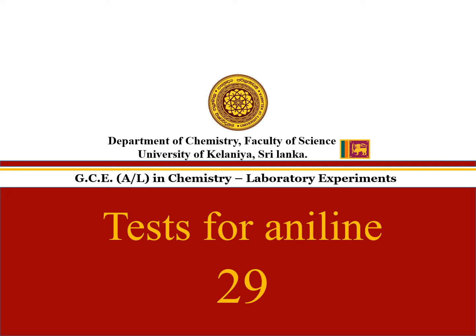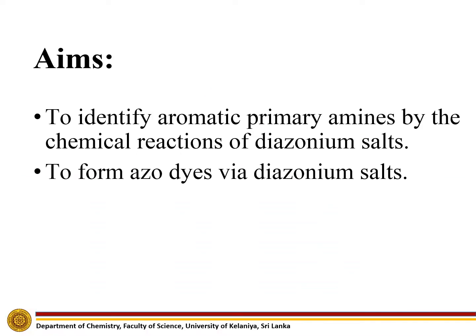Experiment number 29: Tests for Aniline. The aims of this experiment are to identify aromatic primary amines by the chemical reactions of diazonium salts, and to form azo dyes via diazonium salts.